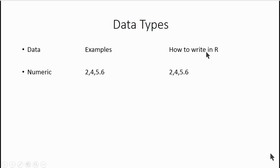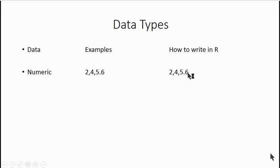How will you write numeric data in R? You just type that number simply. For example, you write 2 in R, you can type 4, you can type 5.6, and R will automatically consider it as numeric data.